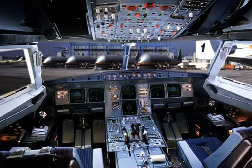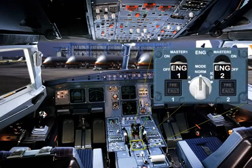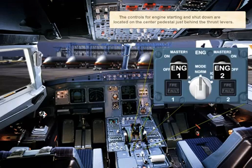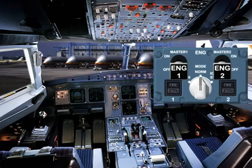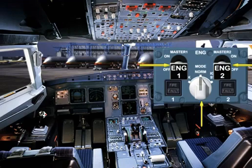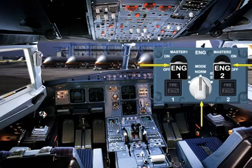The controls for engine starting and shut-down are located on the centre pedestal, just behind the thrust levers. The engine master switches and the engine mode selector enable the pilots for engine automatic and manual starting, engine ventilation, dry cranking, and engine shutdown.